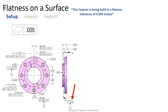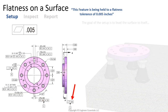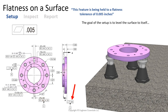The first step is to figure out what our setup is going to look like. We are now in the realm of symbols that won't have datums listed after the tolerance value, but that doesn't mean we have no setup. In fact, our setup is a little more complicated — the goal of the setup is to level the surface to itself.